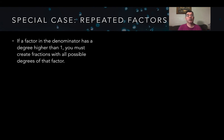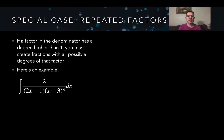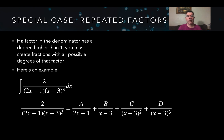If a factor in the denominator has a degree higher than 1, you have to create fractions with all possible degrees of that factor. In this example, the denominator has 2x minus 1, which is fine, but the second factor x minus 3 is raised to the 3rd power. So x minus 3 must be represented with all possible exponents — x minus 3 to the 1, to the 2, and to the 3 — because I don't know which ones will exist. Some may not, in which case B, C, or D might equal 0.